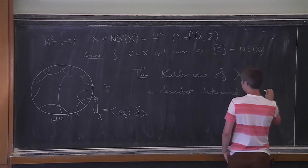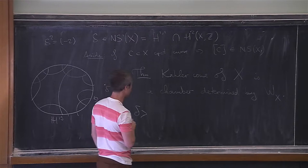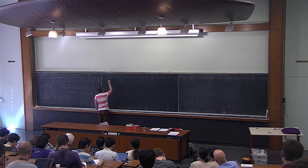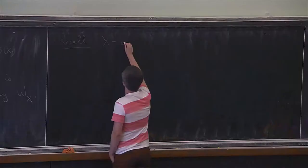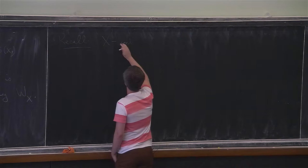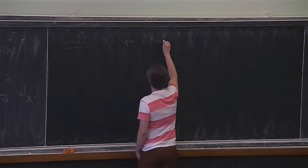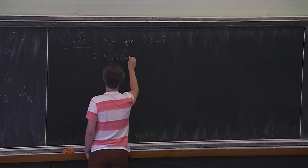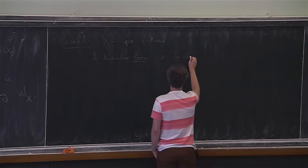What is the Kähler cone? Let me recall that if you have X, any n-dimensional complex manifold, a Kähler form omega is a closed — meaning d omega equals 0 — 2-form, such that if you define G using omega of i, you obtain a symmetric form which is a Riemannian metric.